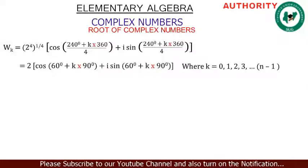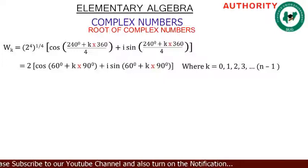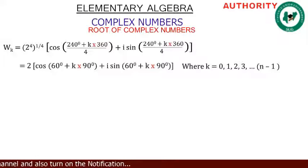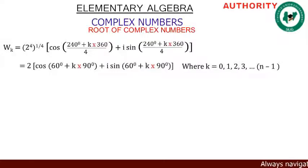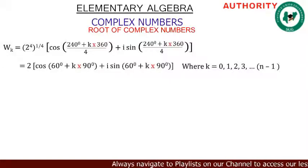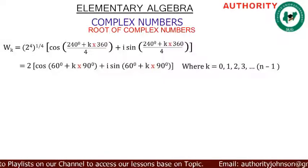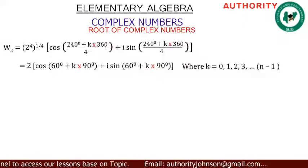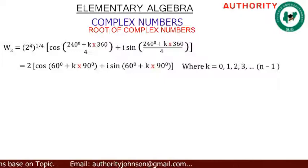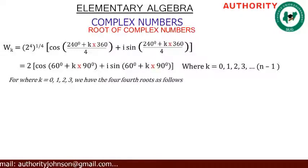We have arrived at our simplified expression: w_k = 2 [ cos(60 + 90k) + i sin(60 + 90k) ], where k = 0, 1, 2, 3. Now we will find each of the four fourth roots of this complex number.